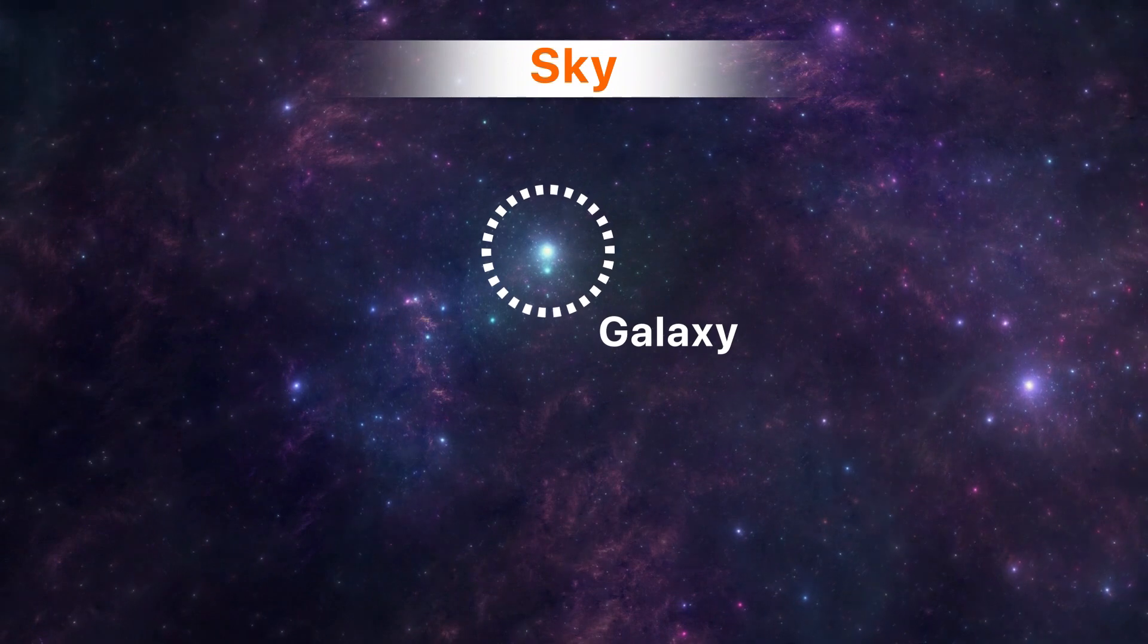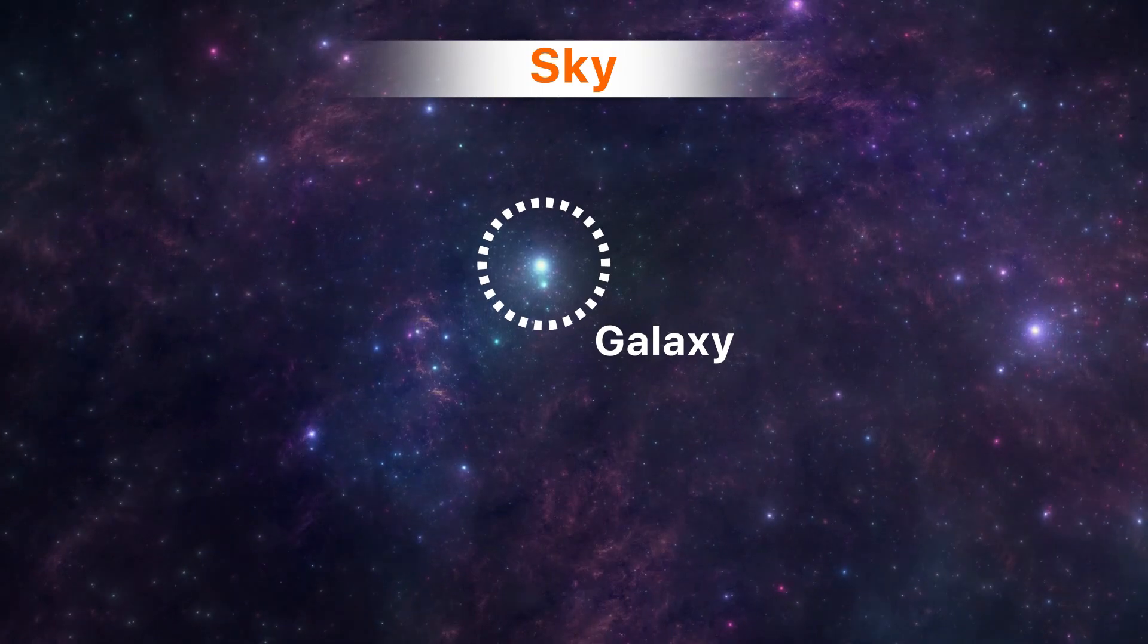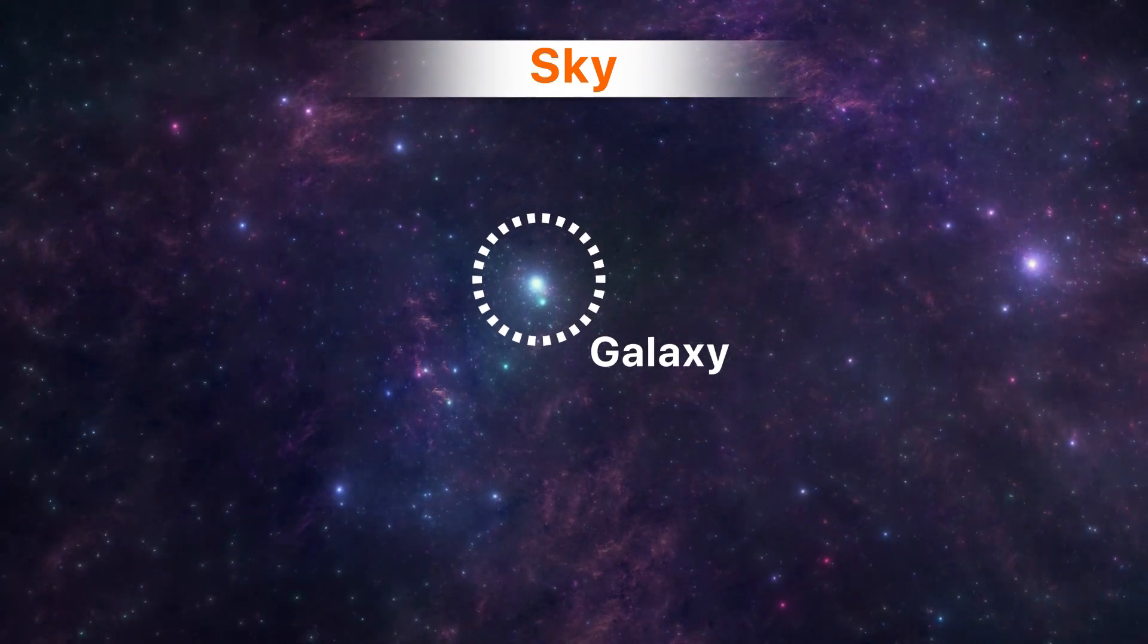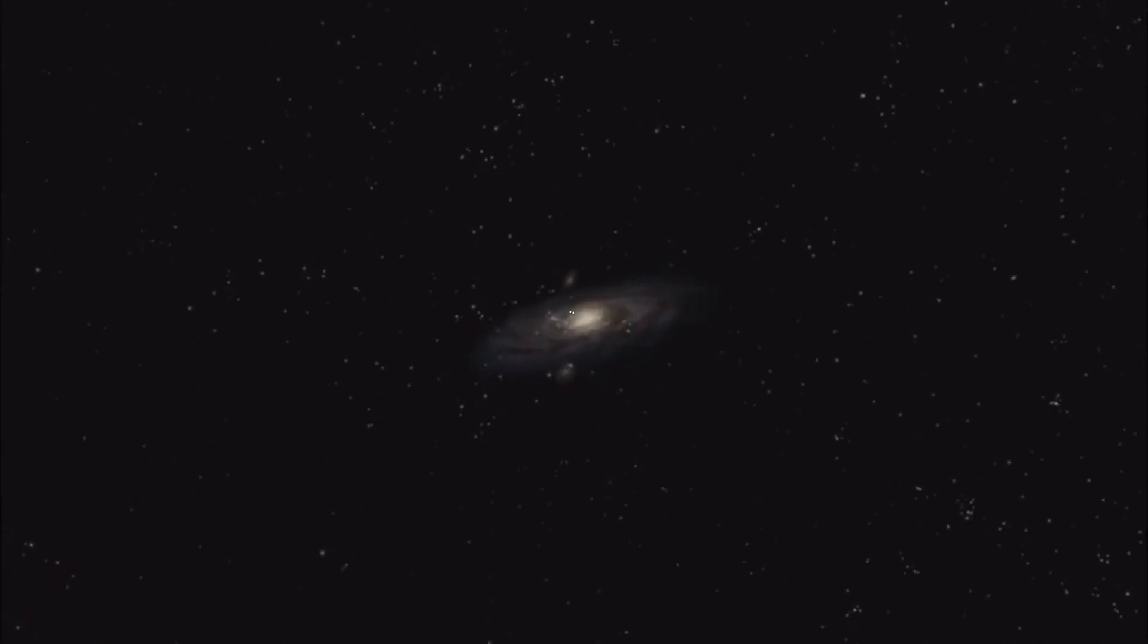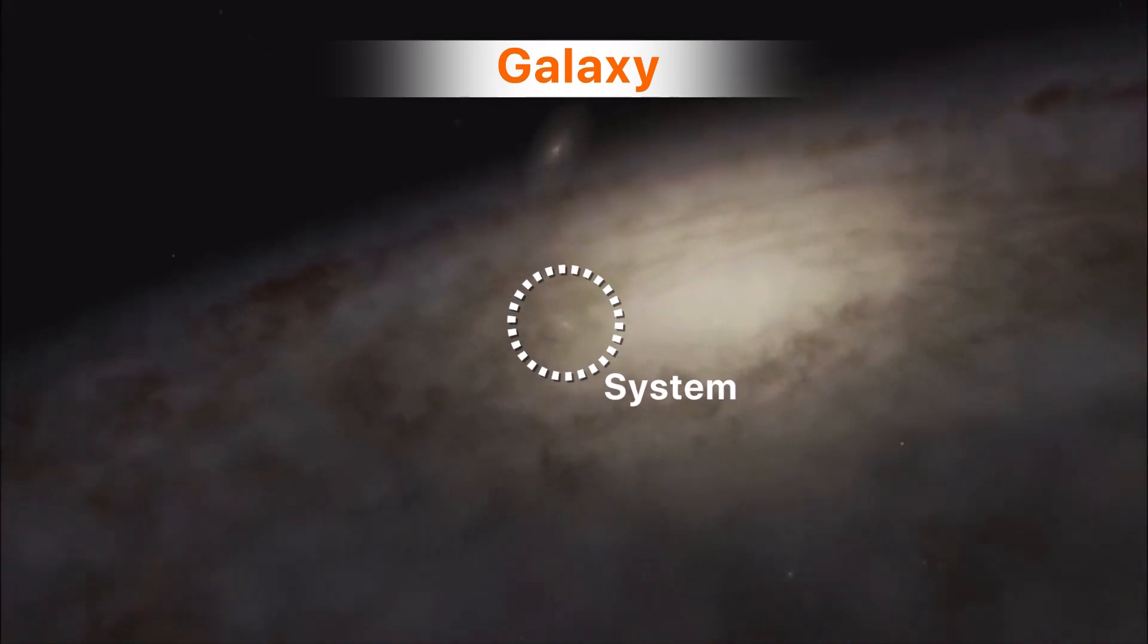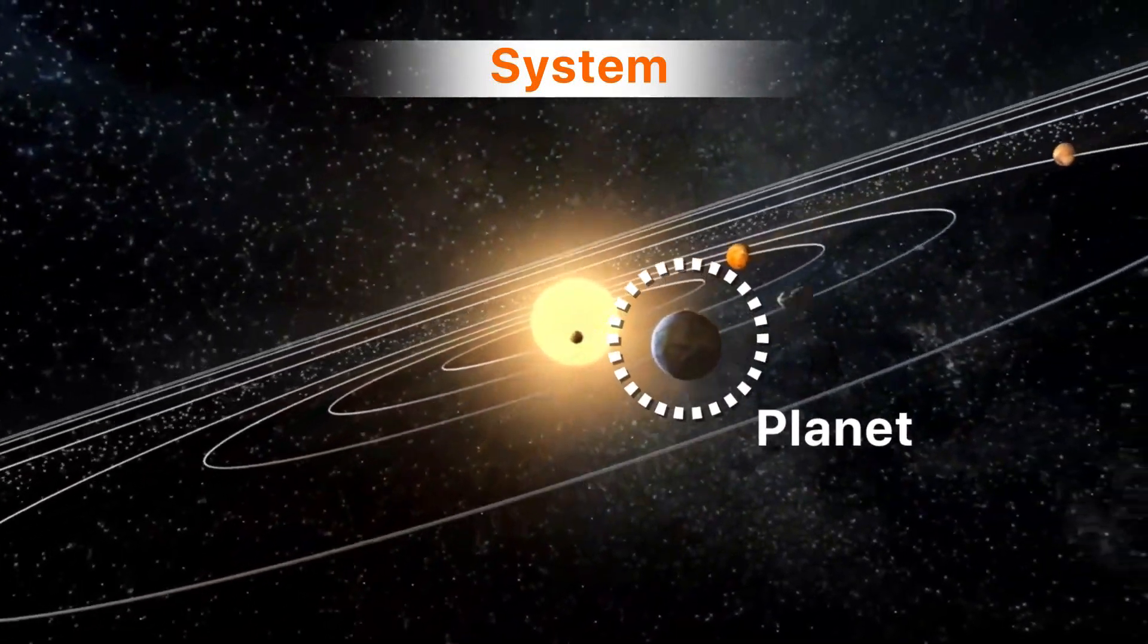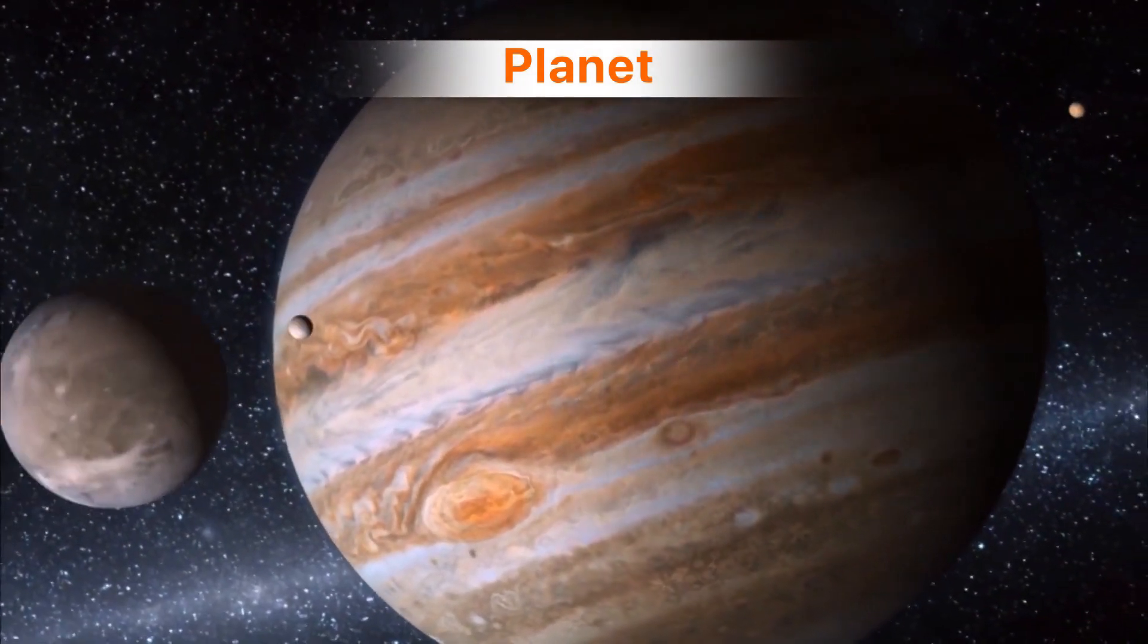Whenever we look at the sky at night, we see small areas that shine in the sky. And whenever we look at these areas with a macroscopic view, each of them is a set of galaxies. Each galaxy is a set of systems, and each system has tens of planets, and each planet has tens of moons.